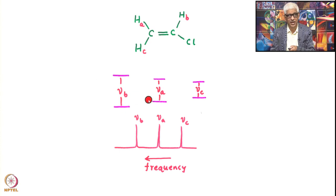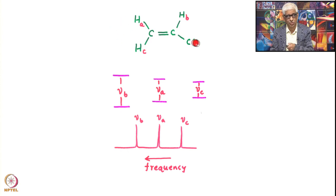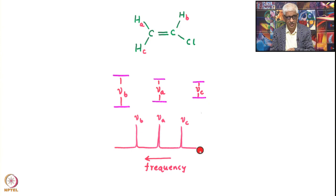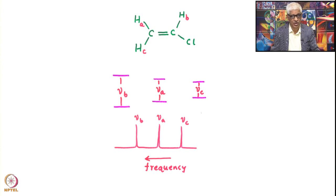This is followed by nu_A, which is the trans proton — the effect of chloride is greatest in the trans position, giving the next highest frequency. Nu_C, which is cis, has more screening due to Van der Waals interactions and similar effects, so it has the lowest delta value. The frequency increases in the order nu_C, nu_A, nu_B, and the chemical shift delta values increase in the same order. This is how chemical shift reflects the electronic environment and thus molecular structure.